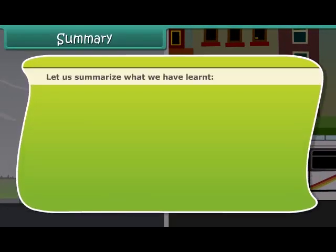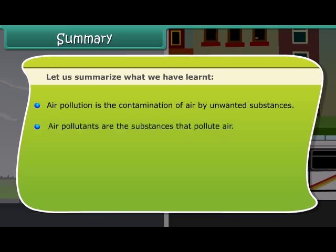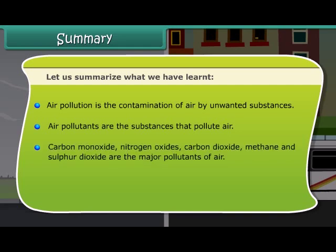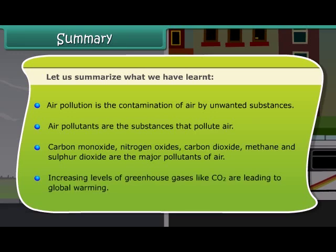Let us summarize what we have learned. Air pollution is the contamination of air by unwanted substances. Air pollutants are the substances that pollute air. Carbon monoxide, nitrogen oxides, carbon dioxide, methane, and sulfur dioxide are the major pollutants of air. Increasing levels of greenhouse gases like CO2 are leading to global warming.